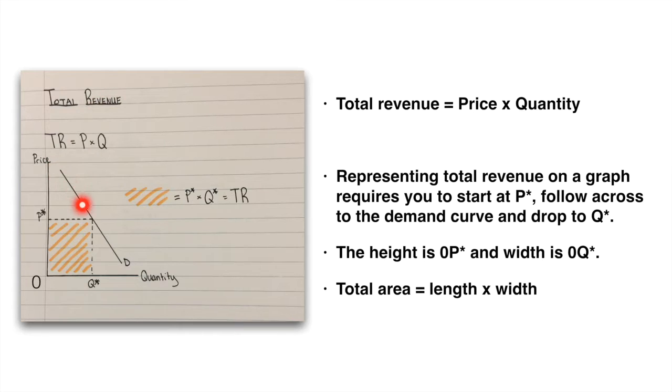The first thing we'll do is give the formula for total revenue, which is price times quantity. When we represent it on the graph, we're going to have to start with P star, which is going to be our per unit price, and we multiply it by how many units we've sold. So we multiply P star by Q star, and then we get the area of this square or rectangle here, which is all in orange. This area represents our total revenue.